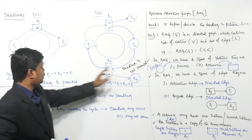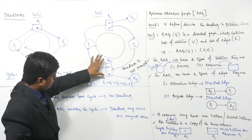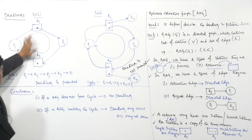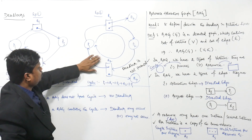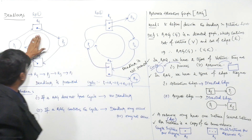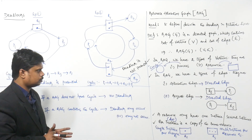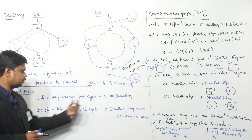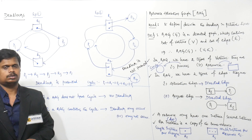Here with multiple instances, even though there is a cycle, I am not facing deadlock. But with single instance per resource and a cycle, I am facing deadlock. So: if multiple instances and cycle — no deadlock. If single instance per resource and cycle — deadlock. This is the explanation for the second conclusion point. Overall, the conclusions are: if RAG does not have a cycle, no deadlock. If RAG contains a cycle, deadlock may or may not occur. Thank you.